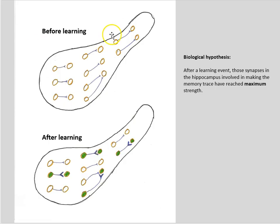Again, using our hippocampus here, here we have our hippocampus with some neurons and some synapses. After learning, a subset of those synapses have been strengthened, and this is the memory trace for that learning event.